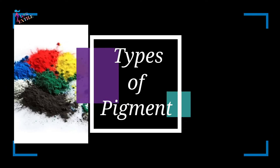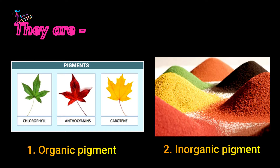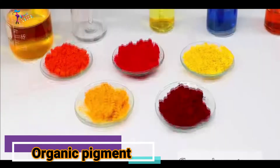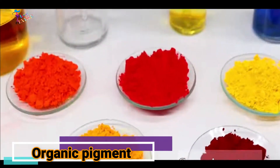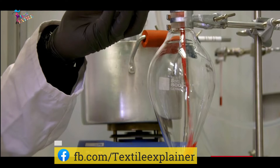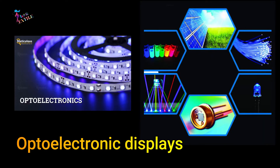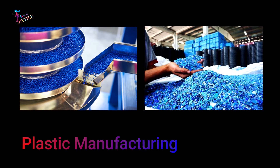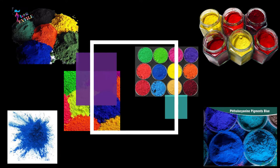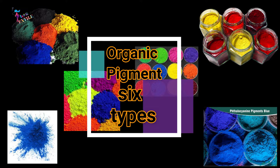Types of pigment. There are two types of pigment: organic pigment and inorganic pigment. Organic pigments contain carbon and typically do not occur naturally. They are used as mass colorants in diverse applications such as surface coating, optoelectronic displays, and plastic manufacturing. Based on chemical makeup, organic pigments are generally classified into six types.